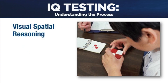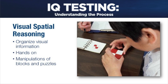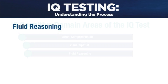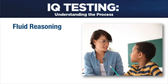Second, we have visual spatial reasoning, which assesses the ability to organize visual information into meaningful patterns and understand how they might change in a given space and varying positions. The subtests in this domain are hands-on, as a student must manipulate three-dimensional blocks and several puzzle pieces.